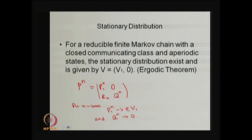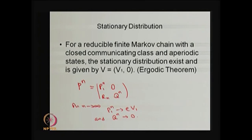The closed communicating class of states has aperiodic states. Then the stationary distribution exists, is unique, and is given by the vector V, which consists of two sub-vectors V1 and the zero vector. This is the ergodic theorem for the reducible Markov chain with the assumption of finite state space and aperiodic states in the closed communicating class.